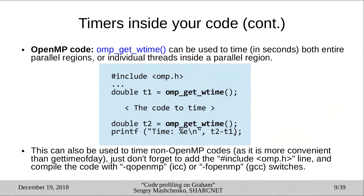You can also use `omp_get_wtime` for serial non-OpenMP code. Modern compilers all have built-in OpenMP support — no external libraries needed. Take your serial code, add `#include <omp.h>` at the top, and compile with `-qopenmp` for Intel compiler or `-fopenmp` for GCC. Then use `omp_get_wtime` anywhere inside your code. Your code doesn't need to be multi-threaded to use these convenient routines.